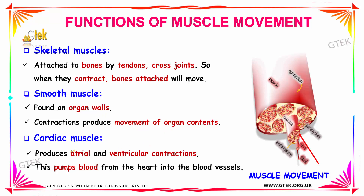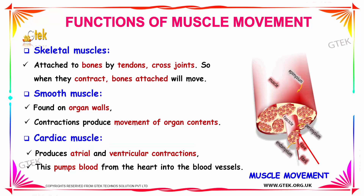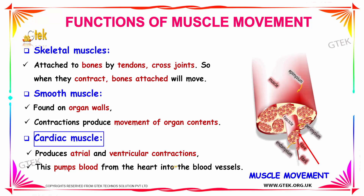The cardiac muscle produces atrial and ventricular contractions, which pump the blood from the heart into the blood vessels. Thus the cardiac muscle produces the movement required to pump blood from the heart into the blood vessels.